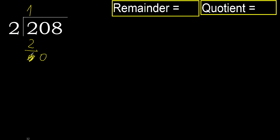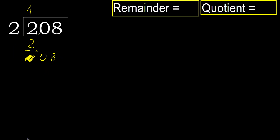Bring down 0 on this side. 0 is less, therefore next — 8. 8 is not less, ok. There are 2 numbers here, therefore complete with 0, because there are 2 numbers. Bring down 0 on this side.